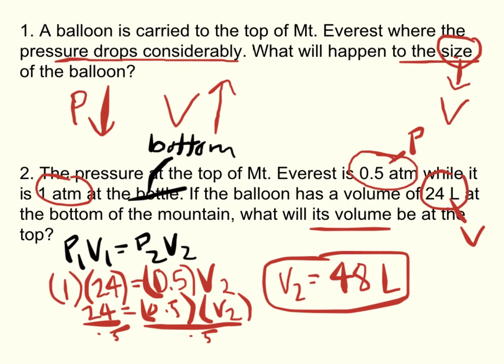Let's check ourselves. We said in number one, the volume is supposed to go up because the pressure decreased. Did that happen? Well, we started at 24 liters, and we ended up at 48. So, yes, indeed, the volume went up. Our answer makes sense.